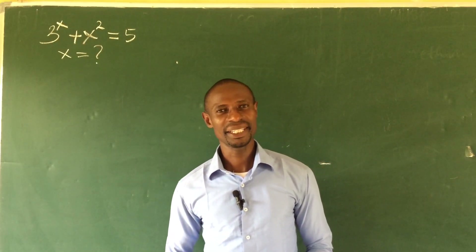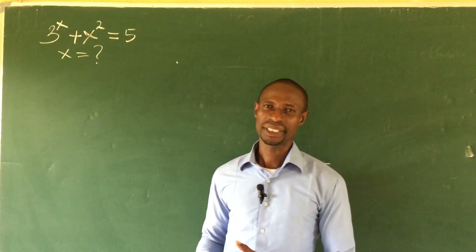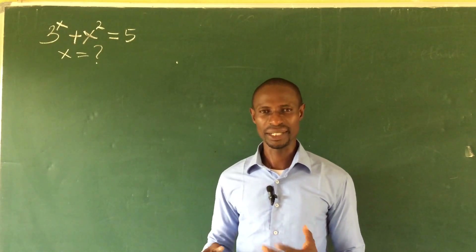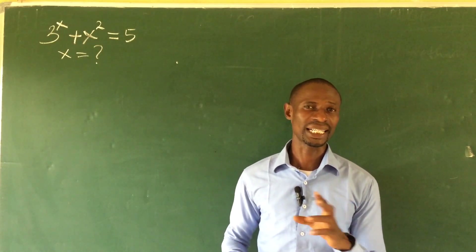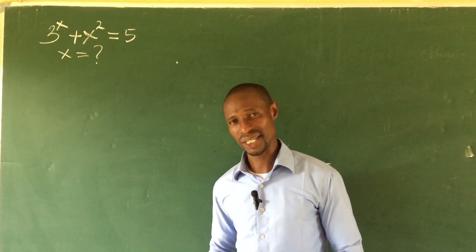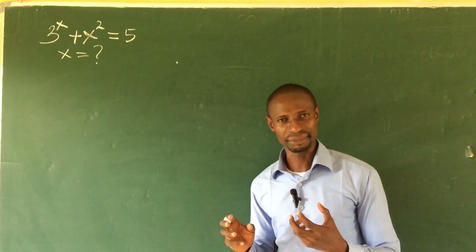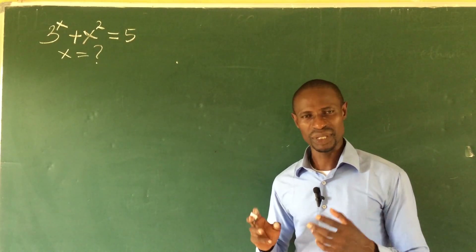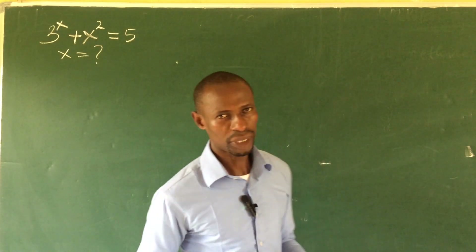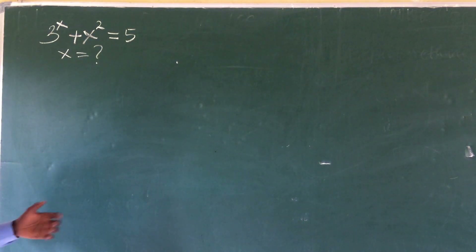Hello, everyone. Welcome to OnlineMaskTV. We have a diophantine equation. How do we solve this equation? I have discovered that some diophantine equations cannot be actually solved analytically — they can only be solved using the graphical method, and I believe this one is one of them. But I tried to use the application of some mathematical formulas to actually get this solved, and I came up with one.